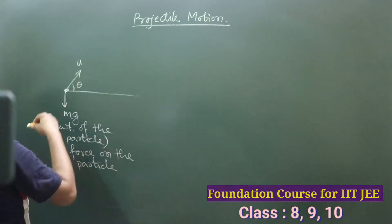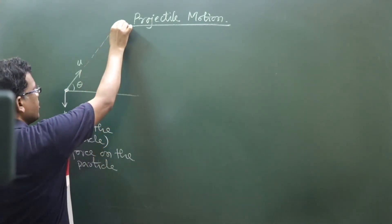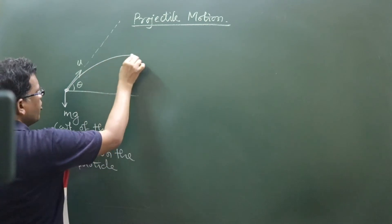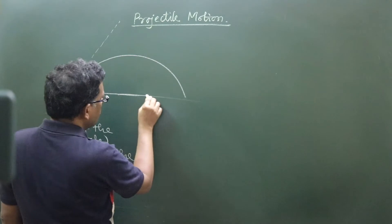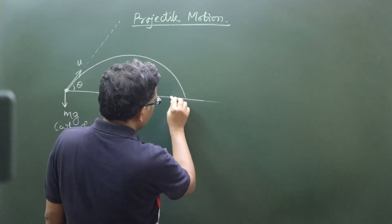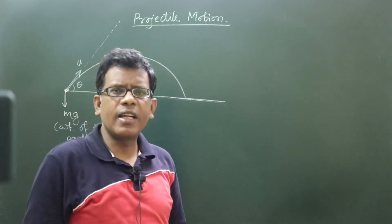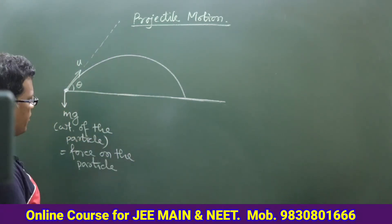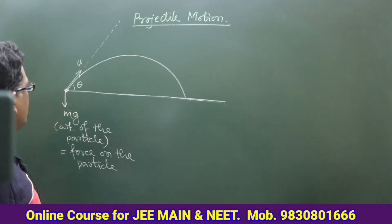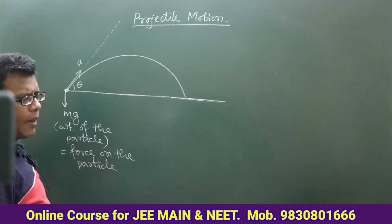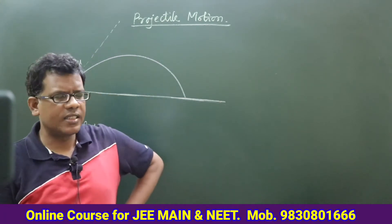...if it is thrown with speed u at an angle theta, we have seen the particle instead of traveling along a straight line follows the path of a curve, and finally it comes back to the ground level — the level from where it was thrown. That means it comes back to ground only. The question arises: why does it happen?